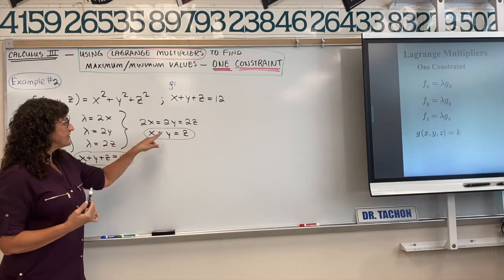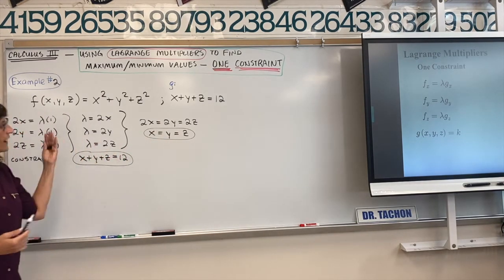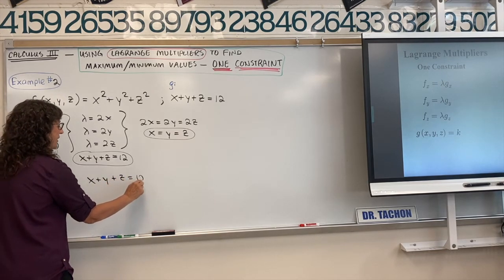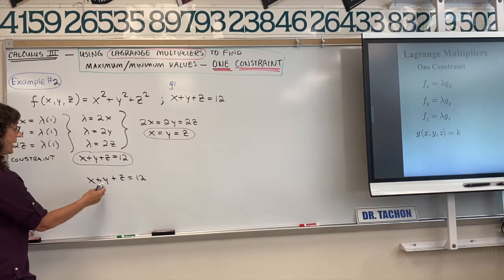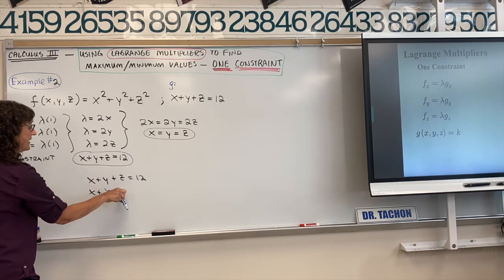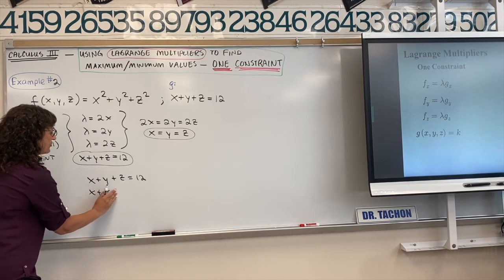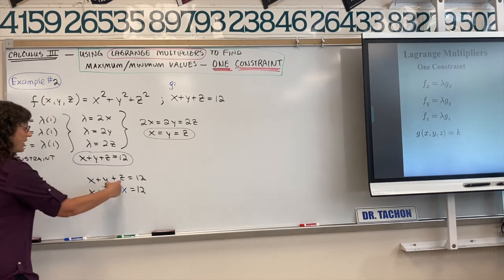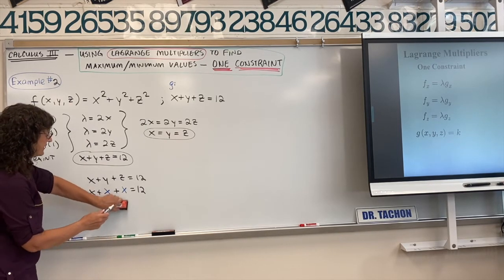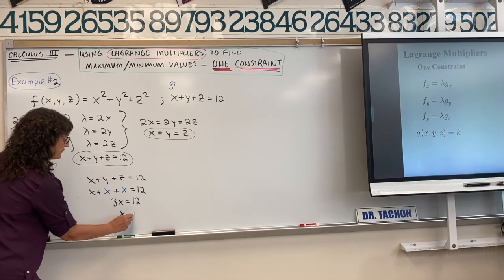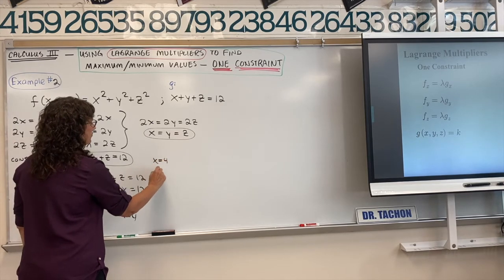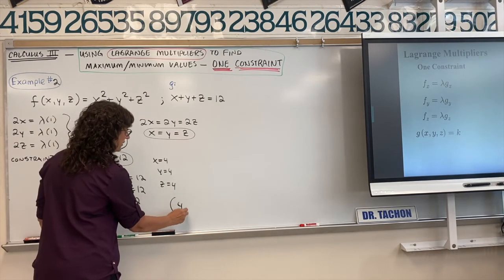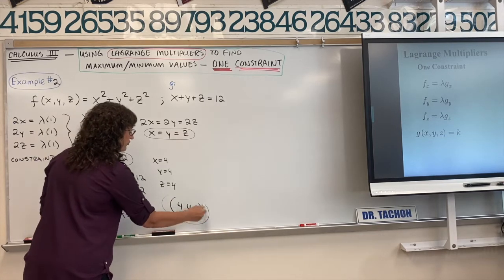Since x, y, and z are all equal and they add up to 12, each value must be 4. Substituting x for y and z into the constraint gives 3x equals 12, so x equals 4. Therefore x equals 4, y equals 4, and z equals 4. This ordered triple (4, 4, 4) is our critical point.